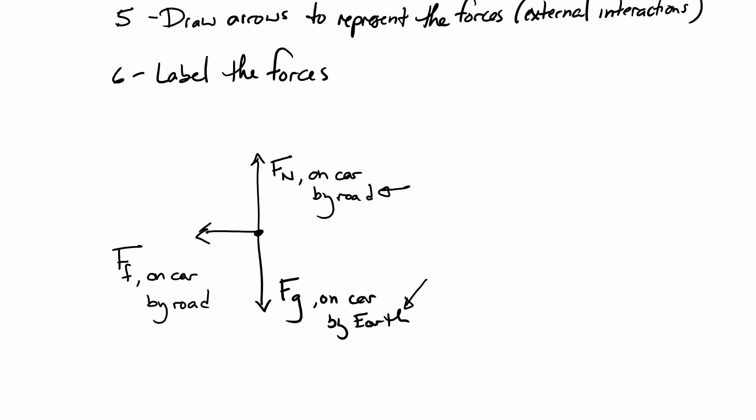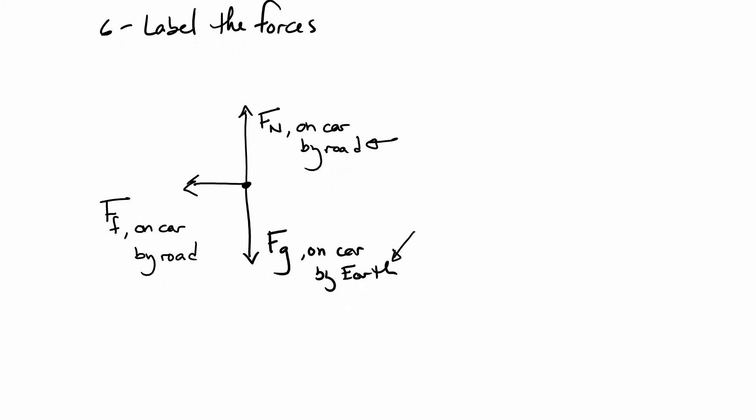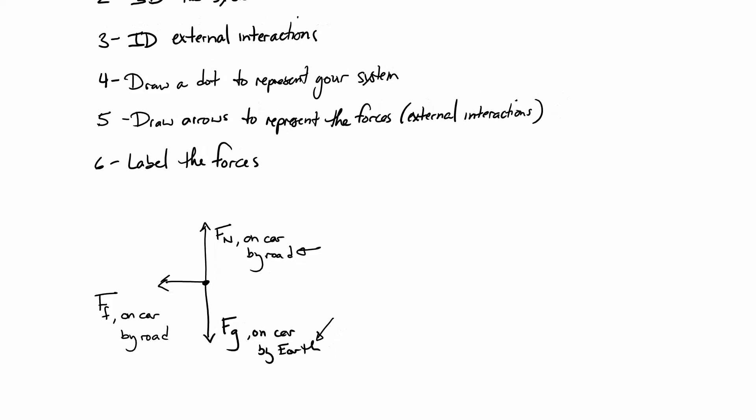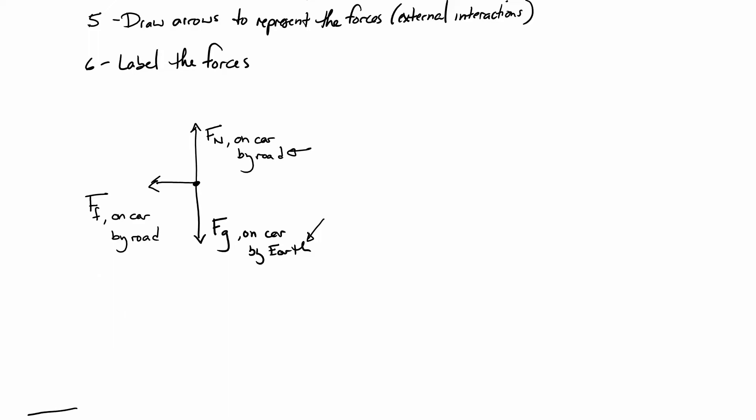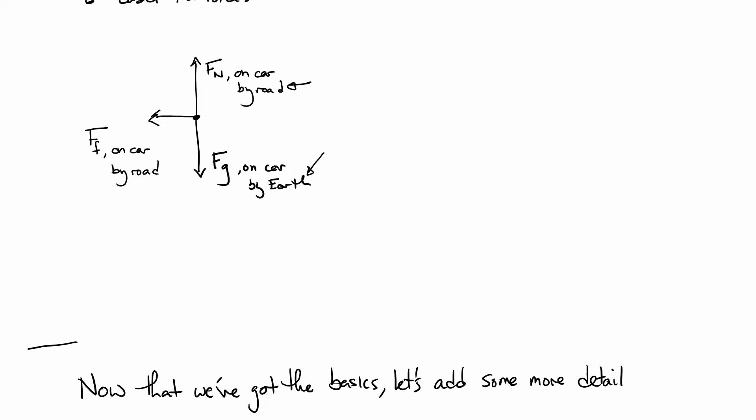We're going to do a lot more of these as time goes on. But the basic rules are always draw a dot for your object. Draw the arrows to represent the forces that are acting on it. You have identified already the interactions that are going on. The things that are in contact with it. And then label them. Now, if we're doing these, we need to be careful because there's some other details to worry about. Specifically, because these are vectors, these arrows have meaning. Their direction matters and their length matters. So, let's think about how we add forces.